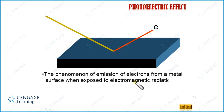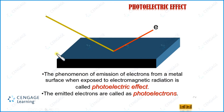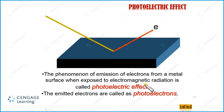This is the photoelectric effect and the emitted electrons are called the photoelectrons. We have some materials or metals when they are exposed to certain energetic radiation, they emit electrons, and this emission of electrons is called the photoelectric effect.